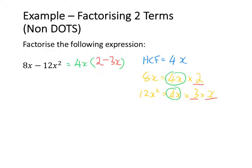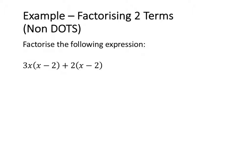Note that the sign in the brackets matches the sign in the original expression. In the last example, I want to factorise 3x(x minus 2) plus 2(x minus 2). The first step is to identify the highest common factor, and the highest common factor is going to be (x minus 2).